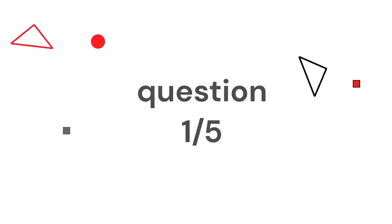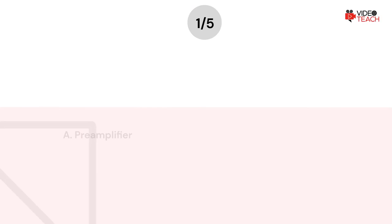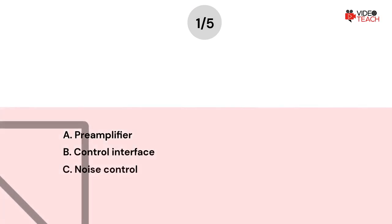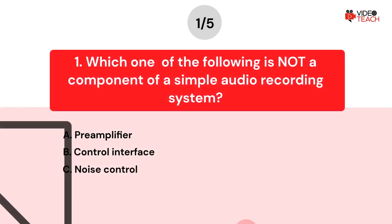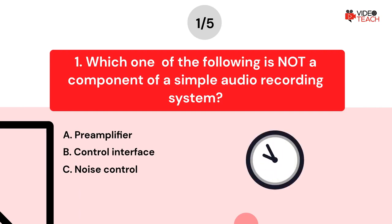Question number one. Which one of the following is not a component of a simple audio recording system? Option A, preamplifier. Option B, control interface. Option C, noise control. Now you have about 15 seconds to think about your answer.